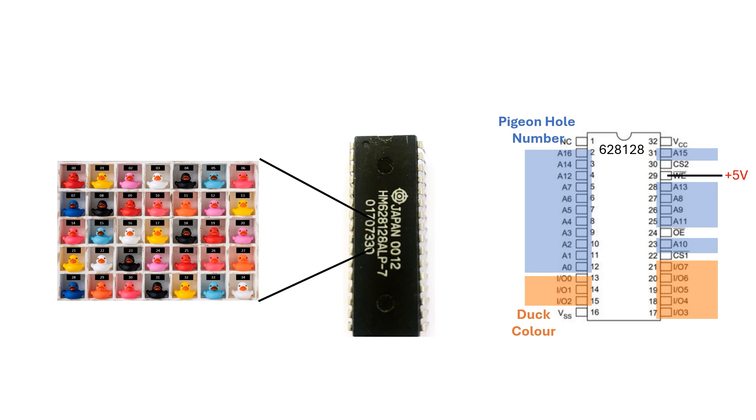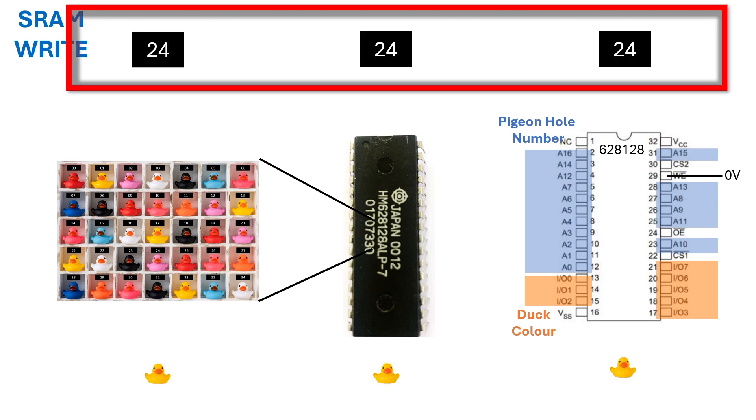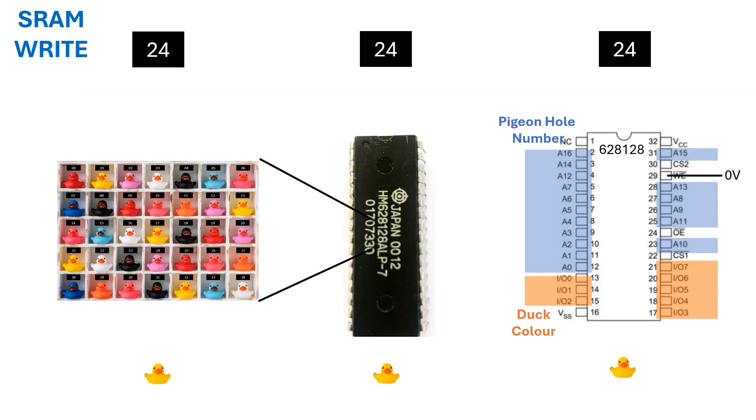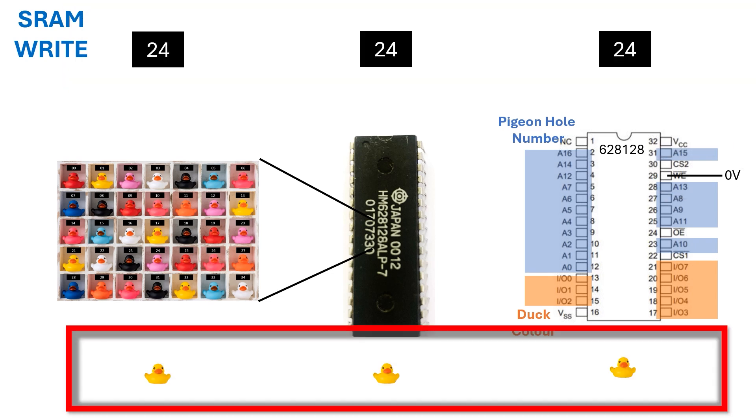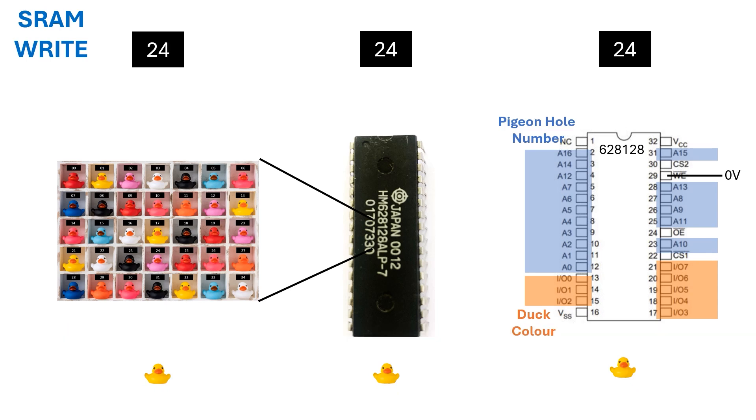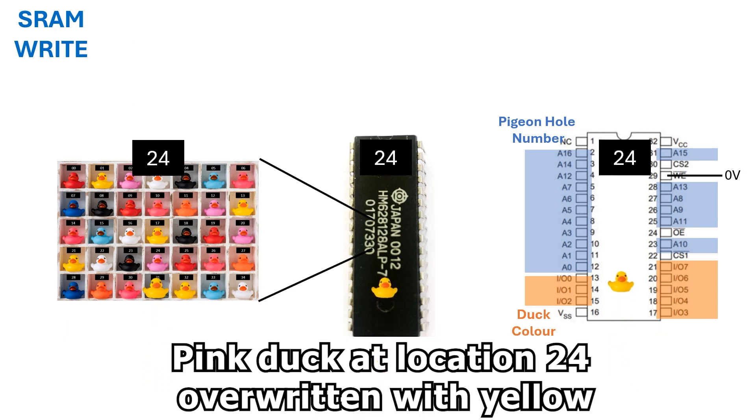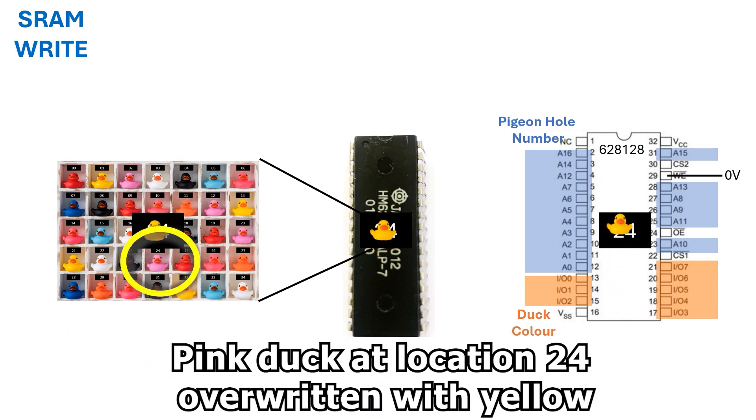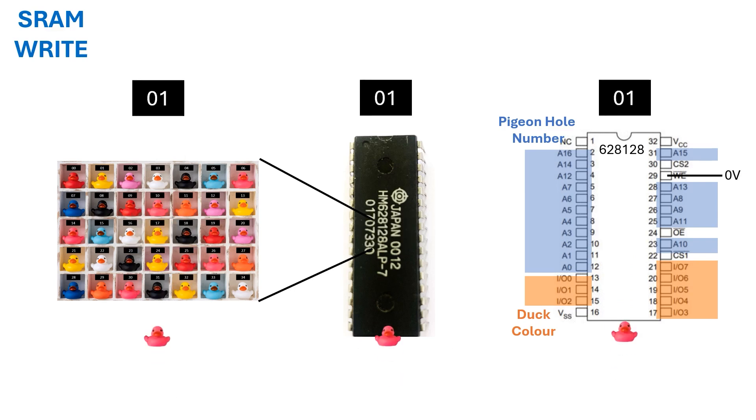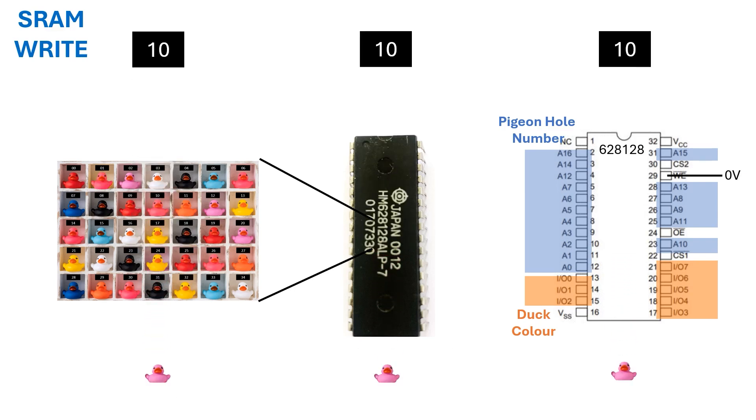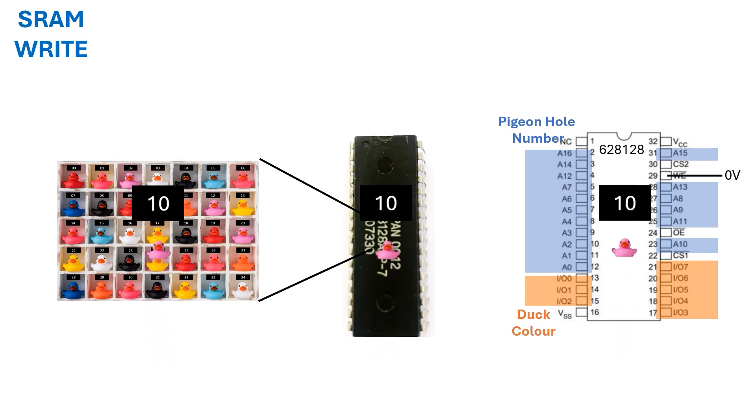Unlike the EPROM, the static RAM allows us to write new data during normal operation. When the write enable pin's low, the memory enters write mode. We present an address on the address lines, but this time, we also place new data on the data lines. Instead of just reading from a memory location, the static RAM overwrites the existing data with whatever it sees on the data lines. Once written, the old data is lost. It's permanently replaced by the new value.